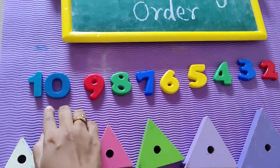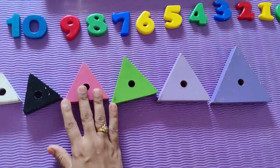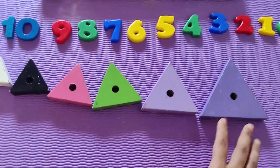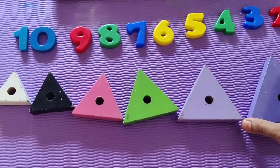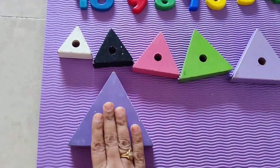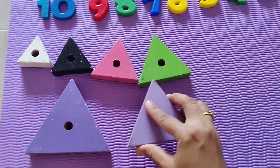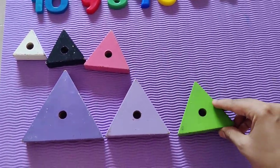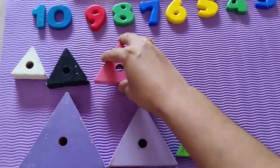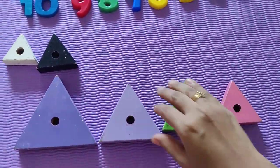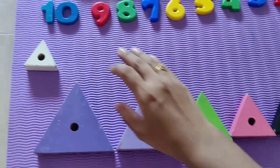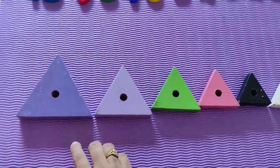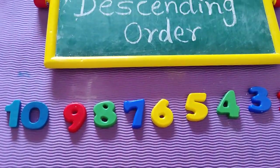Now we will see with the triangles also. We will arrange the triangles in descending order. In descending order, the biggest will come first. So this time the biggest triangle comes first, then a little smaller than that, then a little smaller than the earlier, continuing to smaller and smaller, and the smallest triangle comes last. This is descending order — from biggest to smallest.